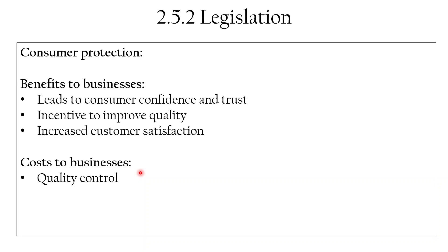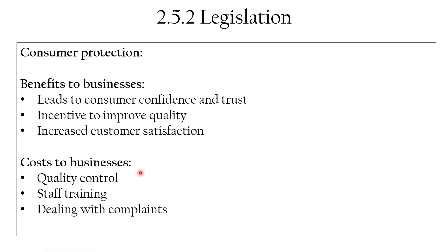But what are the costs? First, businesses will have to invest in quality control — it could be total quality management where all staff are trained, or a quality control system with an inspector at the end of the production line. Businesses will have to train staff to provide good advice and ensure products are manufactured correctly. They'll also have to deal with complaints and issue refunds, and there might be wastage from products that don't meet standards. So there are costs, but also benefits to businesses following consumer protection laws.